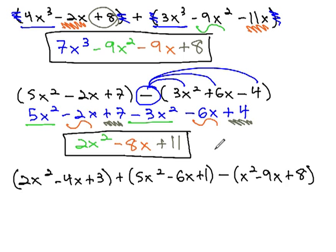So we can see with adding polynomials, all we are doing is combining like terms because there's nothing to distribute through the parentheses. With subtracting polynomials, we have to distribute the negative first, and then we can combine our like terms.